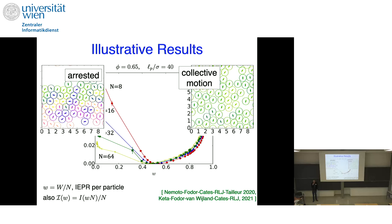In the paper, we called this quantity 'active work' — the work done by the swim forces — rather than entropy production. It does measure breaking of time reversal and satisfies a fluctuation theorem. Trajectories with high entropy production rate have more swimming around, and trajectories with low entropy production rate have less. On the collective motion side there's more swimming; on the arrested side, there's less.